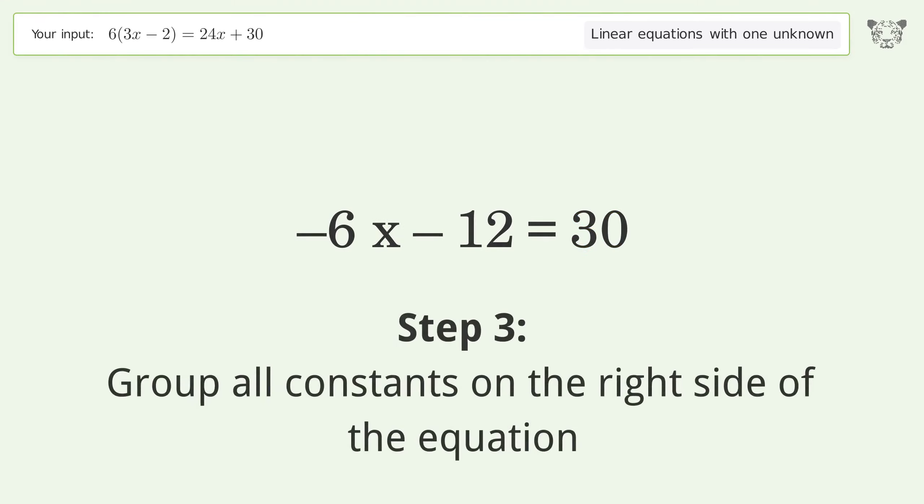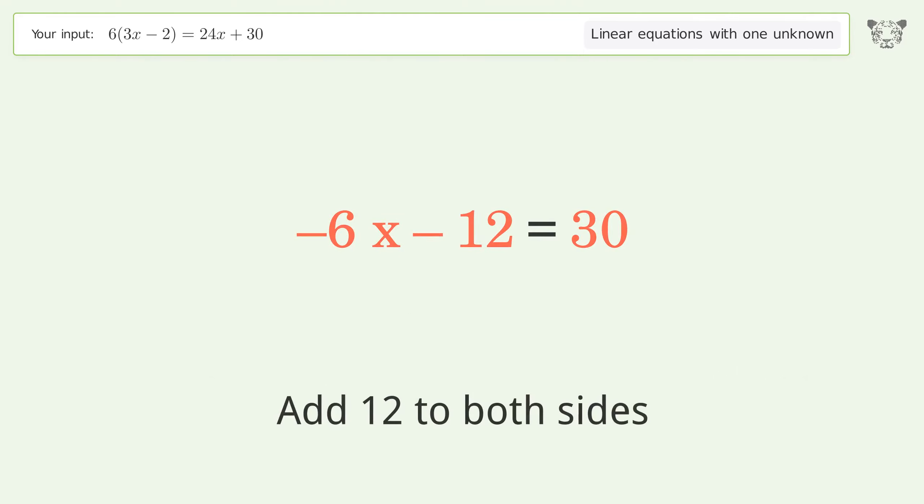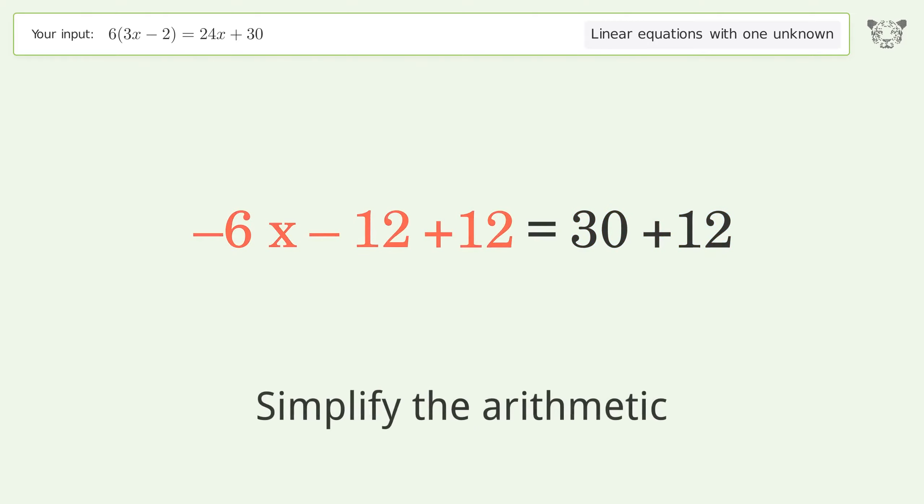Group all constants on the right side of the equation. Add 12 to both sides and simplify the arithmetic.